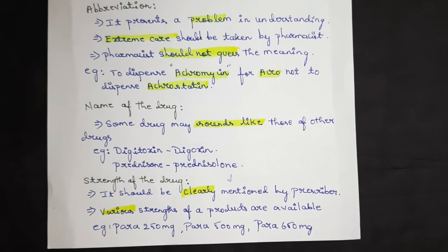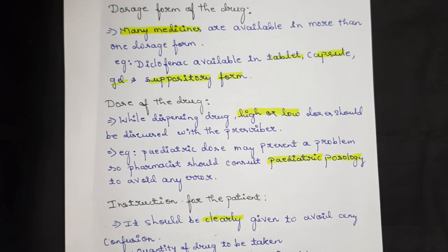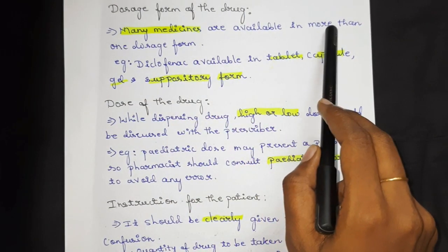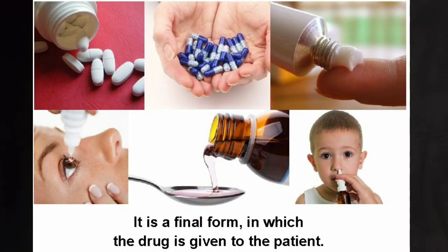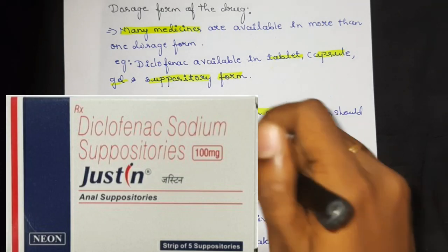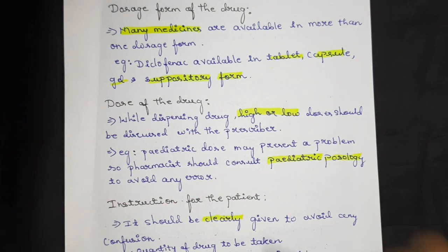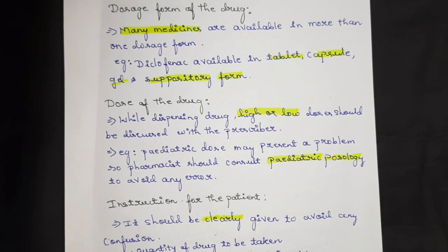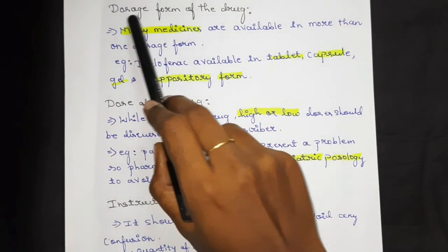The fourth error is dosage form of the drug. The medication is available in more than one dosage form — liquid dosage form, solid dosage form, and semi-solid dosage form. For example, Diclofenac is available in tablet, capsule, gel, and suppository form. Diclofenac is a prescription medicine and the doctor must clearly mention the dosage form. Just as with strength of the drug — like Paracetamol 250mg or 650mg — the same clarity should also be followed for dosage form.